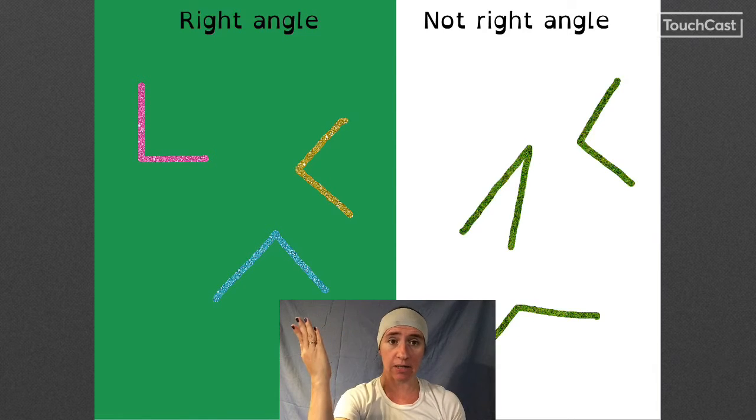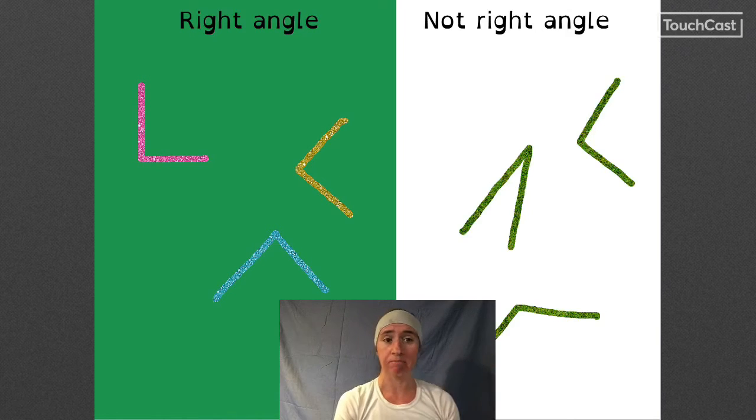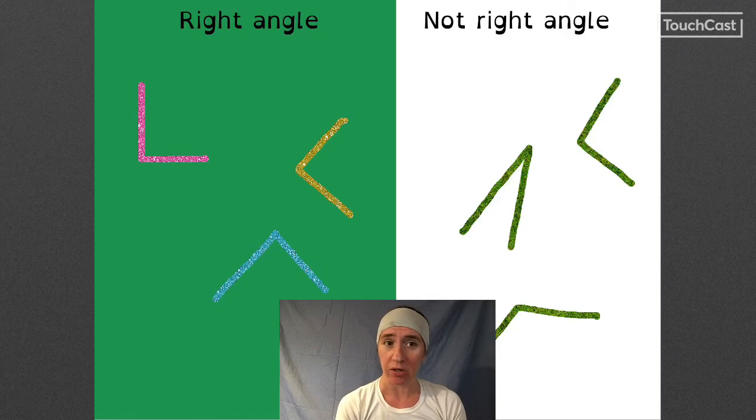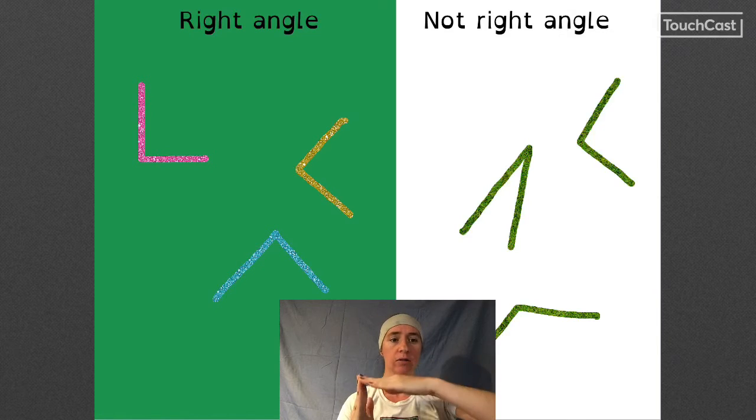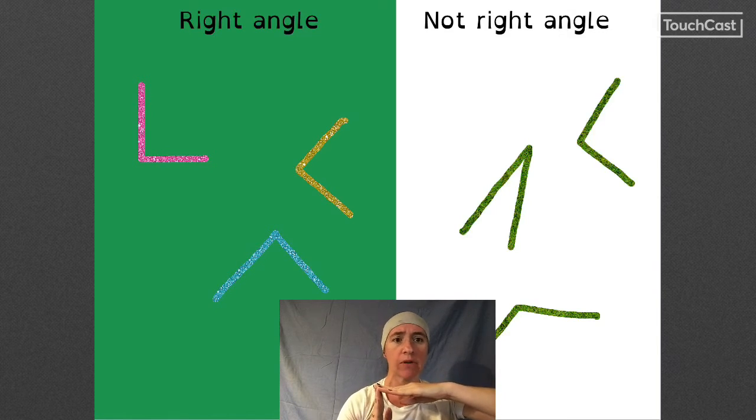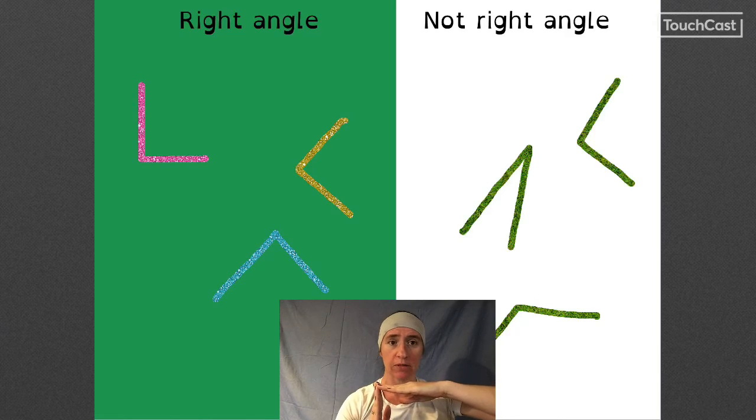Now if you look on this side you will see those are all examples of right angles, these ones aren't right angles. So again notice what's the difference? You will probably figure out the difference if I tell you that the other name for a right angle is a square angle. Think about what a square looks like, how all of those angles look like the corner of a piece of paper or the corner of a square.